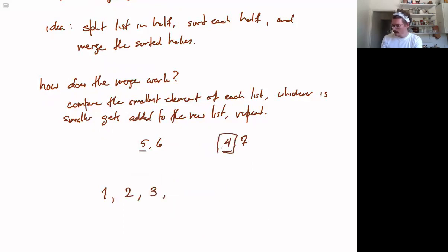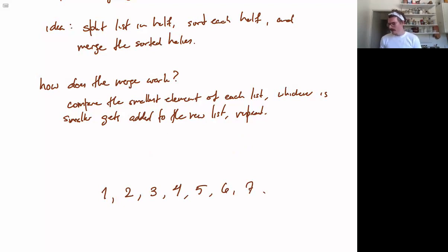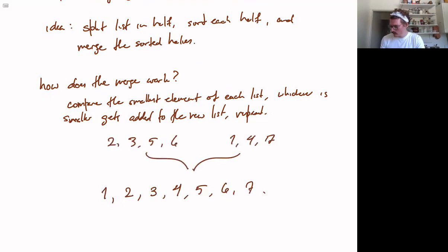We continue comparing the smallest remaining elements: whichever is smaller gets added and removed from its list. Then the next smallest, and so on, until six and seven are the last two. Seeing the process done visually, hopefully you now understand basically how the merge works.